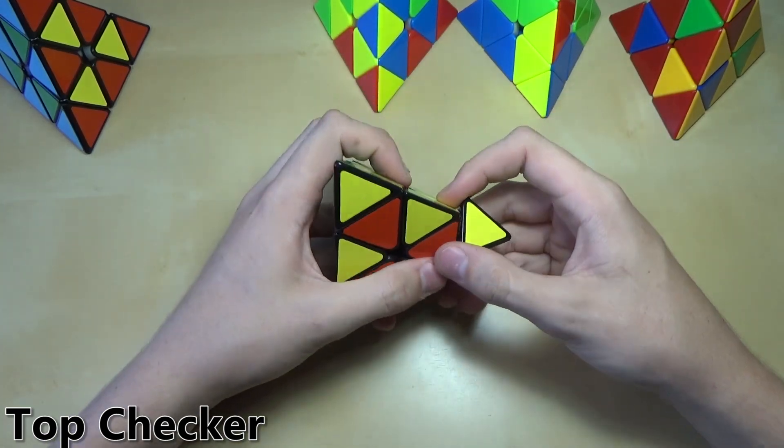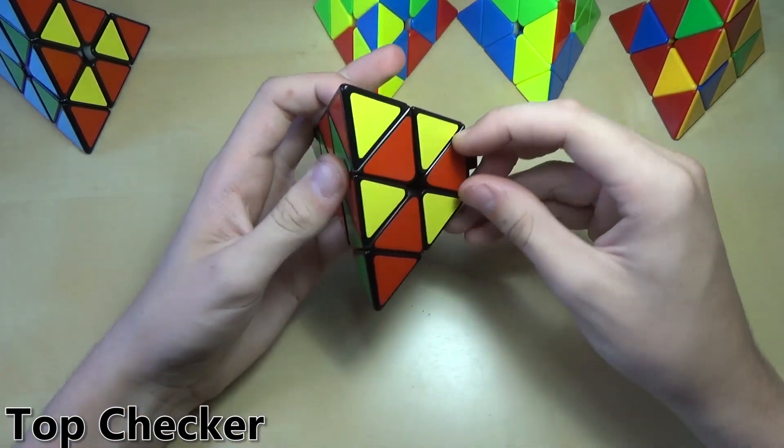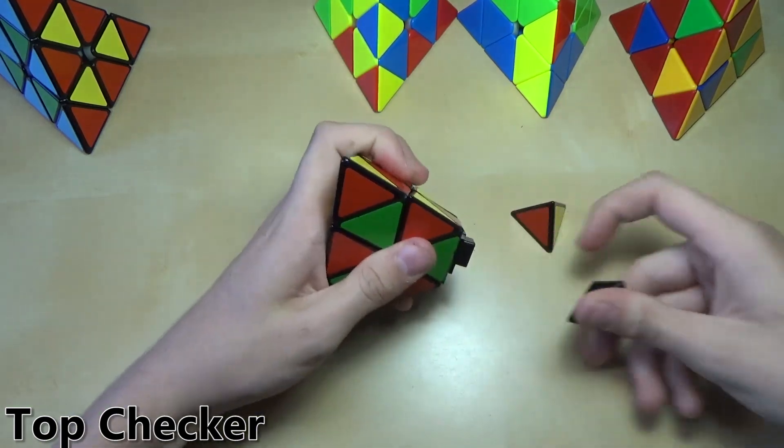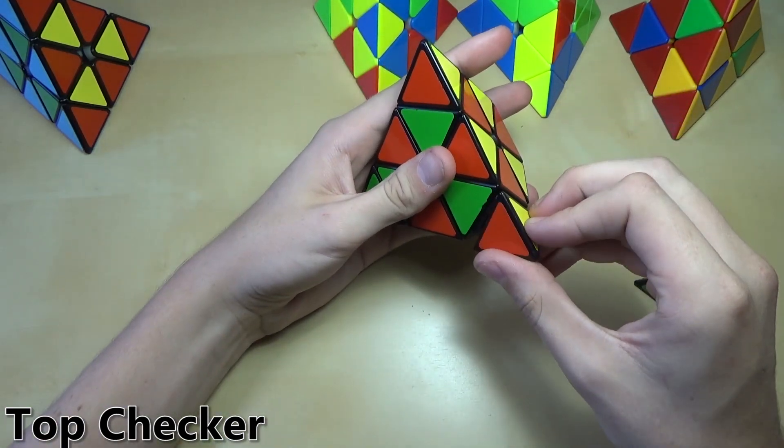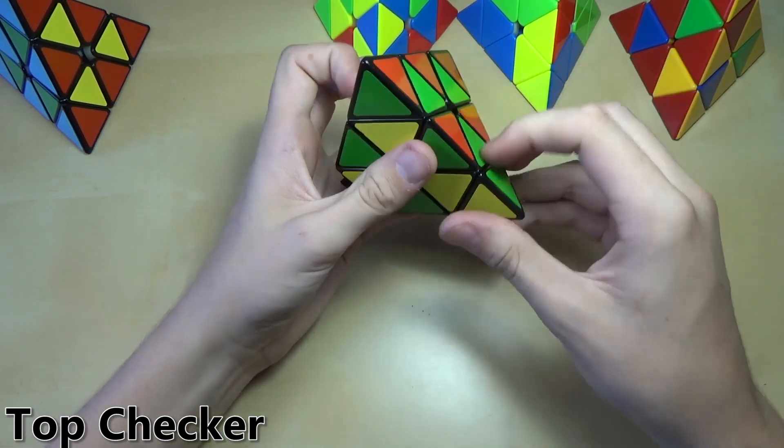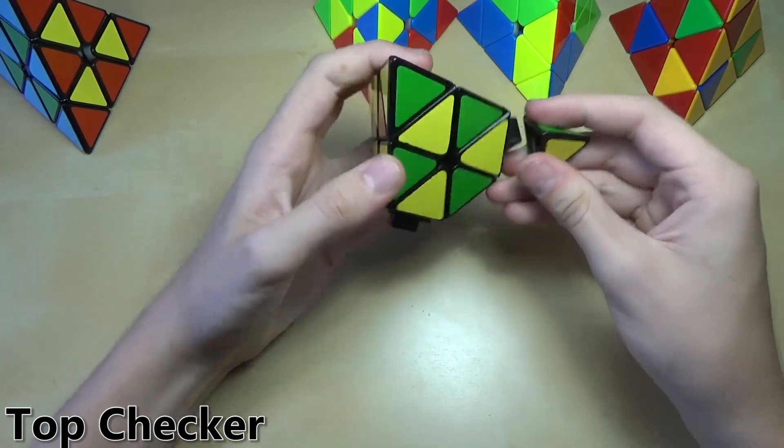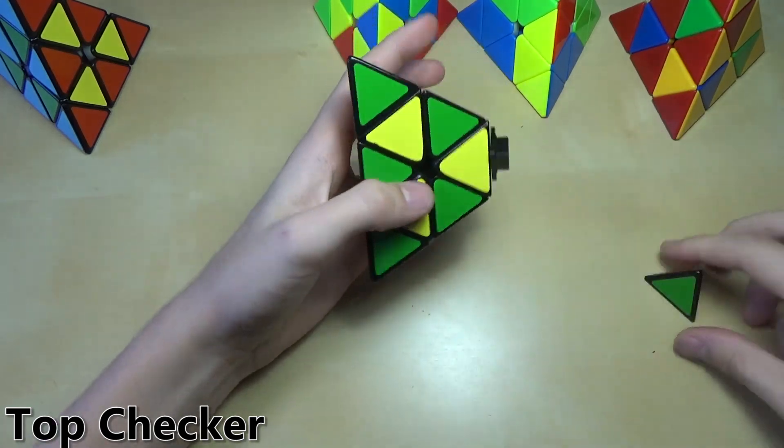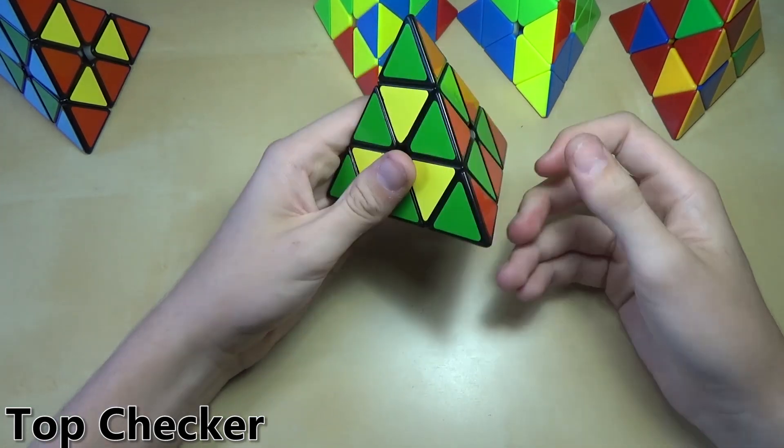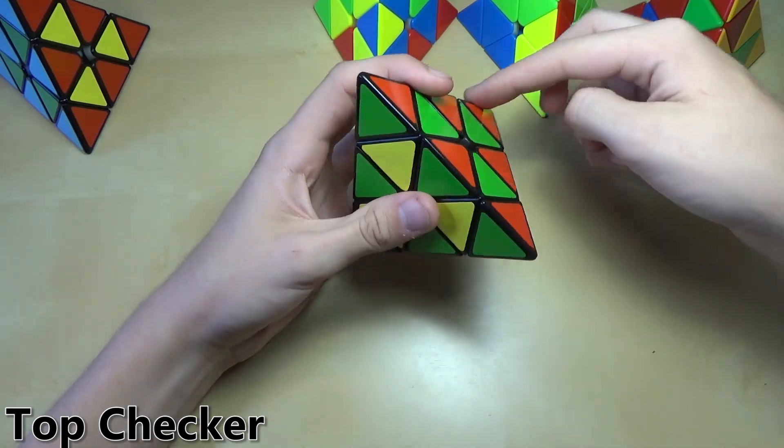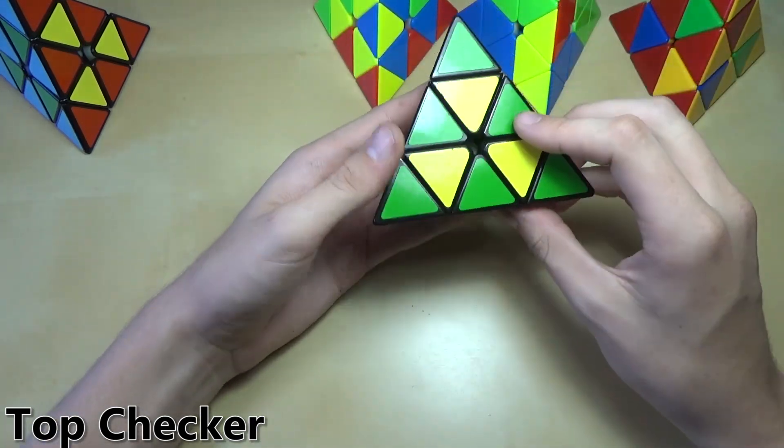Then what you want to do is take off this tip, move it over to the next one. Just make sure that's right. Yeah, it looks like it. Then take off this tip and move it over to the next one. And then move that one onto that. Pretty much you just want to cycle them all around until it looks correct like this.